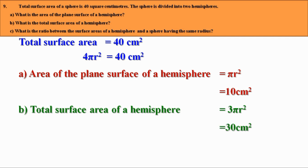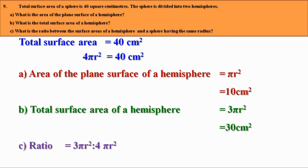Now, find the ratio between the surface area of a hemisphere and a sphere having the same radius. Let the radius be r. The surface area of a hemisphere is 3 pi r squared and the surface area of a sphere is 4 pi r squared. Therefore, the ratio is 3 pi r squared to 4 pi r squared. Cancelling pi r squared, we get the ratio as 3 to 4.